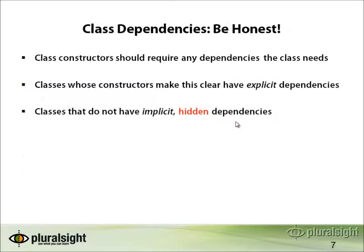When talking about class dependencies, we want to be honest: a class constructor should require any dependencies the class actually needs. Classes whose constructors make this clear have what I'd call explicit dependencies. However, classes that don't make this clear have implicit or hidden dependencies — they're lying to you. When they say you can just new them up without passing anything, but then they don't work if the database isn't there, that's telling you something false.